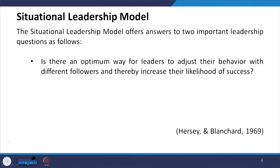The situational leadership model offers answers to two important leadership questions. Is there an optimum way for leaders to adjust their behavior with different followers and thereby increase their likelihood of success? It will always be important that the leader adjusts behavior according to the maturity level of followers. If followers are different and their maturity levels are different, the leader needs the flexibility to adapt accordingly.